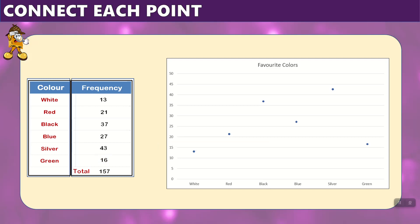All we have to do now is connect each point: white to red, red to black, black to blue, blue to silver, and lastly silver to green. And now we have our line graph in plain sight.